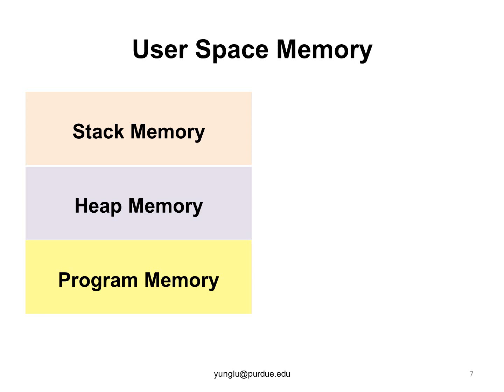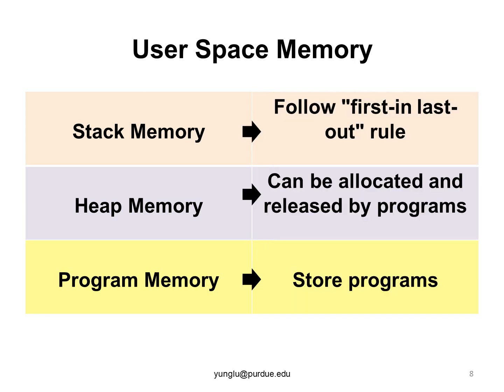The stack memory follows a special rule called first in, last out, or last in, first out. The heap memory is more flexible — a program can allocate or release memory from the heap. The third part stores computer programs. The program memory is managed by operating systems and will not be further discussed in this class.